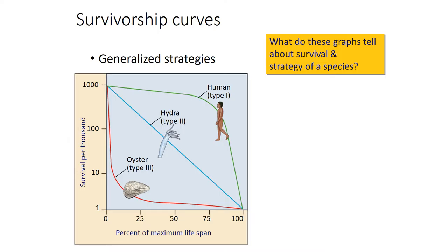Something else that can affect a population is an organism's survivorship curve. Let's look at this graph: we see survival per thousand on the y-axis, and percent of maximum lifespan on the x-axis. What do these graphs tell us about the survival strategy of a species?